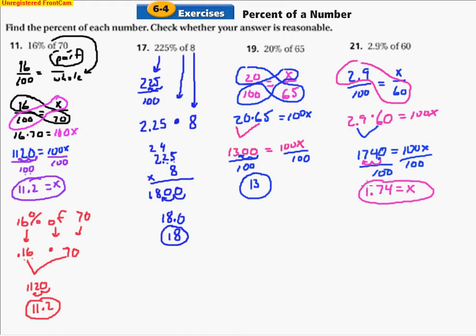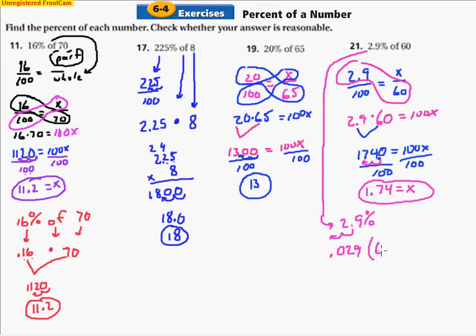We can also get the same answer using the decimal method. Taking 2.9%, if I move that decimal one, two spaces, I have 0.029. Then multiply by 60: 60 times 29 gives 1,740. Now counting the decimal places — there are 3 total — so I move the decimal 1, 2, 3 spaces and get the same answer: 1.74.